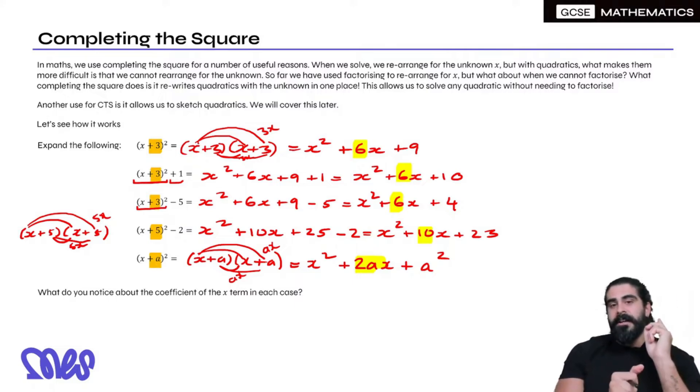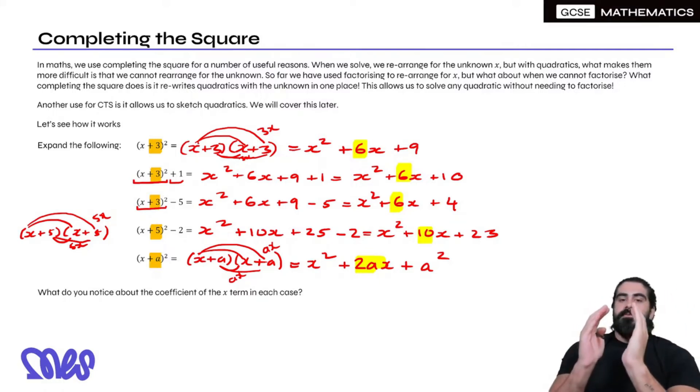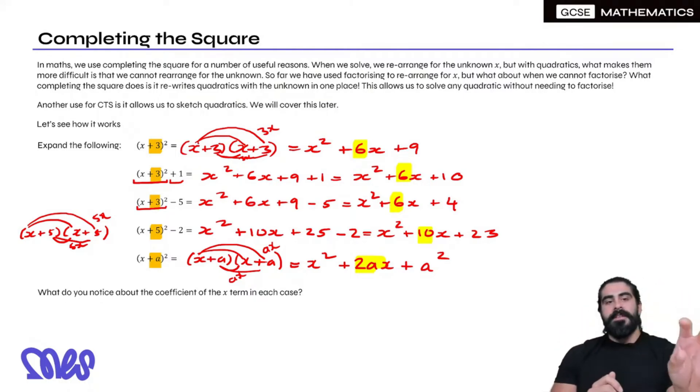Essentially everything that is in yellow highlight is double what is in the orange, and that's the key to completing the square. Basically we're going to rewrite everything that's on the right side back into the left side. Everything that's on the left side is what we call a completed square, meaning x is in one place in a bracket with a square on top.